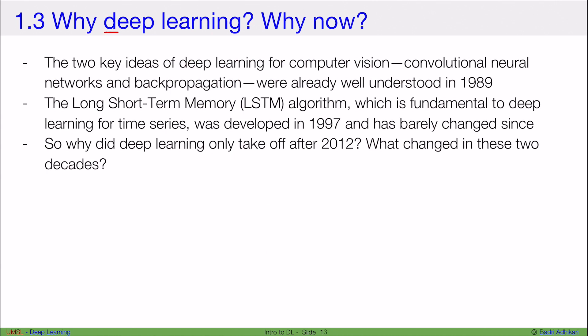One common question that people often get asked about deep learning is why deep learning and in particular, why now? Why wasn't deep learning there maybe years ago? And why is it the right time that deep learning became popular? Now, the reason why people ask this is because the two key ideas of deep learning for computer vision, for example, the convolutional neural networks and the back propagation algorithm, this is the optimizer that actually updates the weights, they were already well understood in 1989.